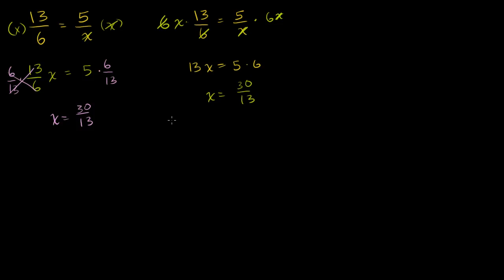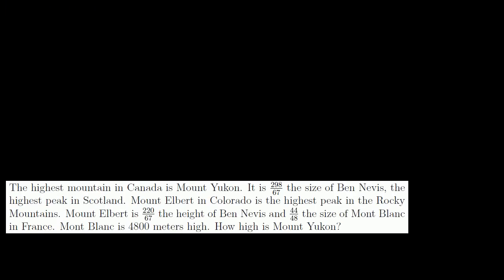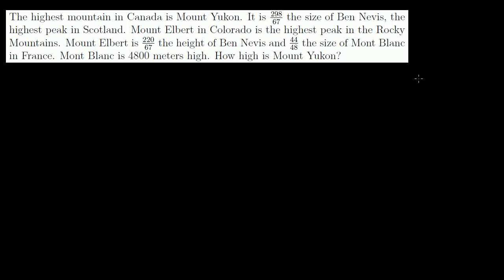Now that we're all warmed up, let's tackle some actual word problems. The highest mountain in Canada is Mount Yukon. It is 298 over 67 the size of Ben Nevis. So let's say Y for Yukon is equal to 298 over 67 times N for Nevis.